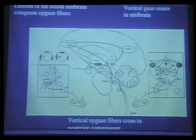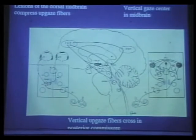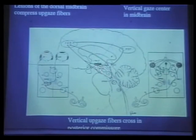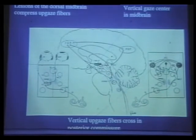The same arrangement applies for vertical gaze. The vertical gaze center lives in the rostral midbrain and has several components—the rostral interstitial nucleus of the MLF, the interstitial nucleus of Cajal, and the area of Darkschewitsch. The important thing to know is the supranuclear components live above the nuclear components, and the supranuclear vertical gaze center lives between the thalamus and the midbrain. So when you have rostral midbrain abnormalities at the thalamomesencephalic junction, you can get vertical gaze problems.